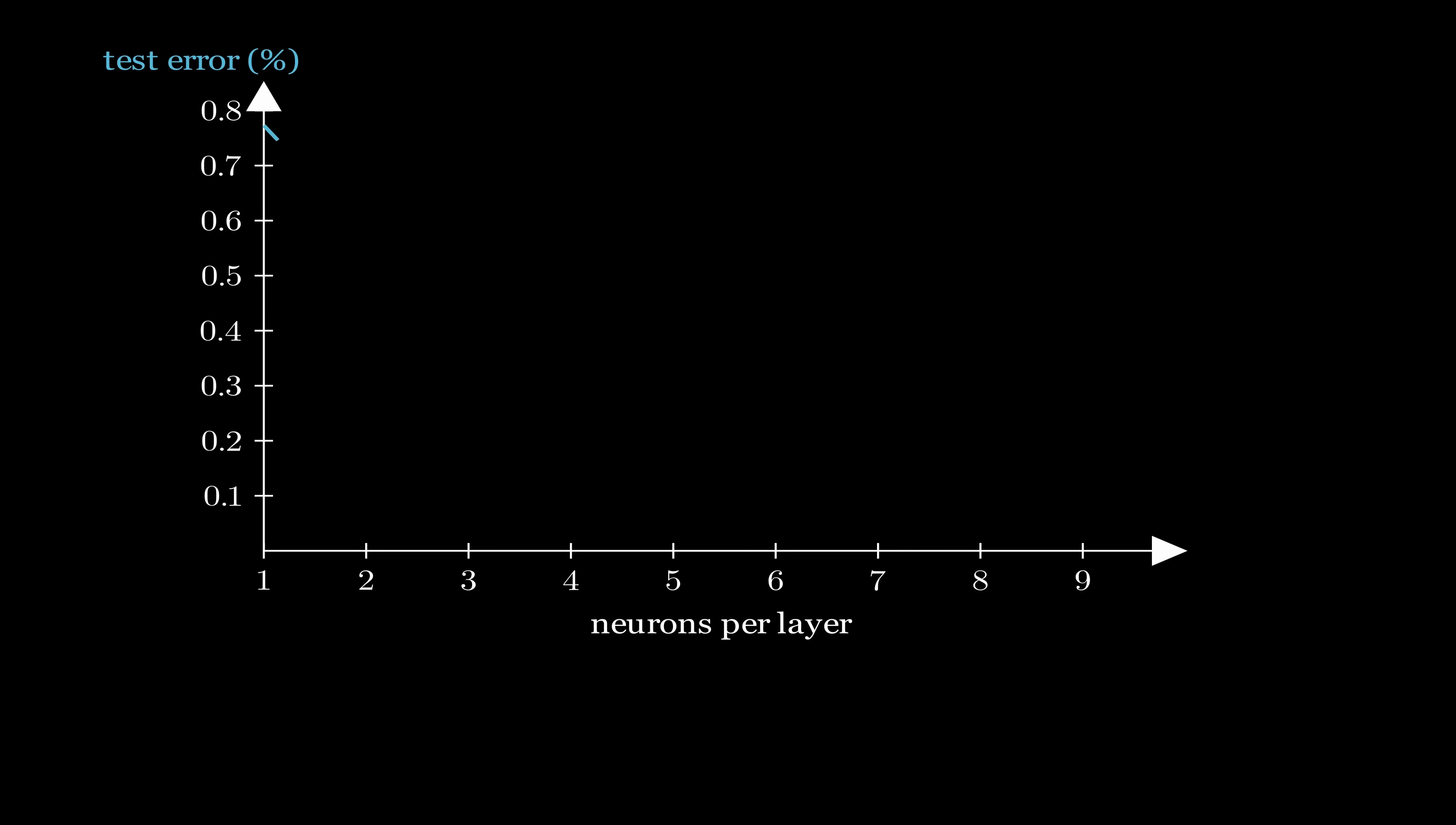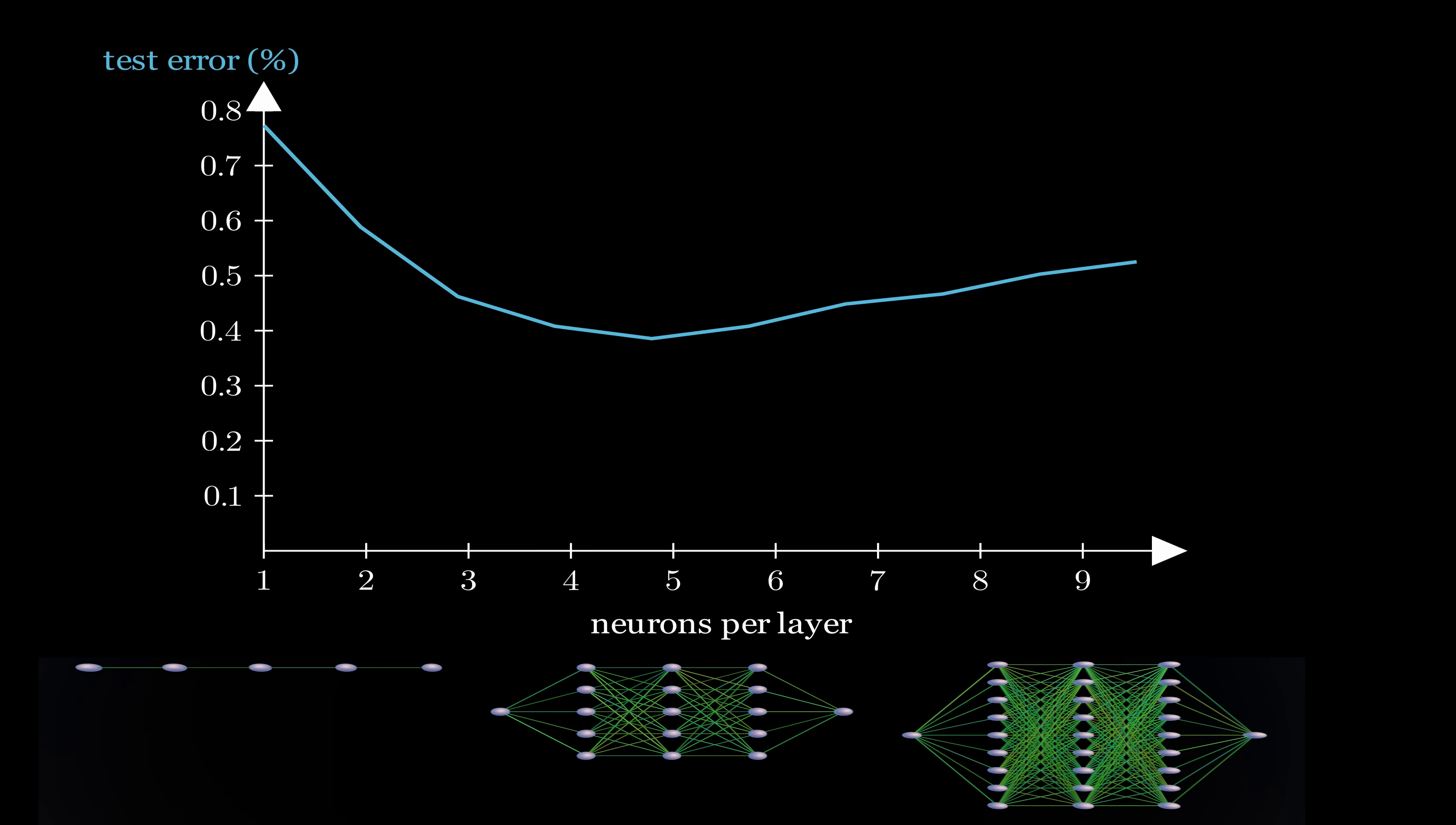Here are the results you get training neural nets of varying sizes on an image classification dataset. As you can see, the test error decreases as the neural net is made bigger up to this point. But then it begins to go up again when the size is increased further. The very largest neural net actually achieves zero training error. It perfectly memorizes the entire training set, but it's not the best model. The model with the lowest test error is this one in the middle.